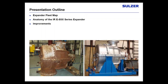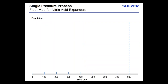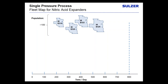Today we're going to be talking about improvements that we offer specifically on the IR hot gas expander in nitric acid plants. We'll discuss the expander fleet map, go through the anatomy of the IR expander specifically, and then discuss the improvements that we offer.